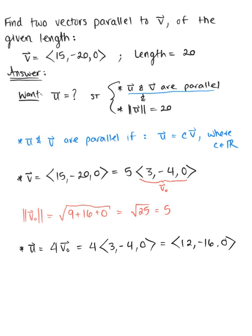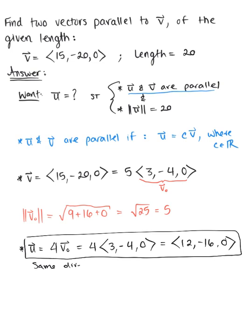And so this vector U here is in the same direction as the given V. And then if we want to find another vector, because we need two vectors parallel to V, we could throw a negative in the front.